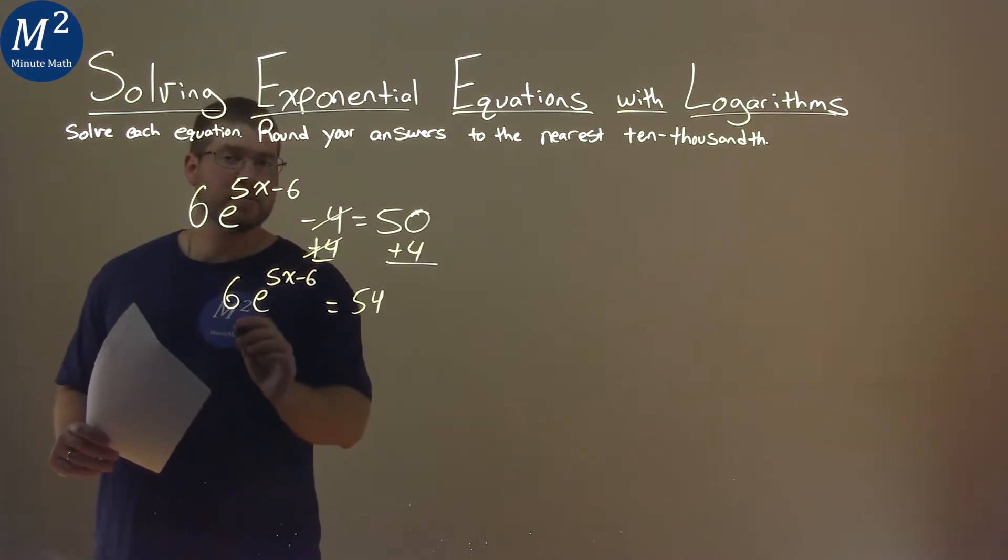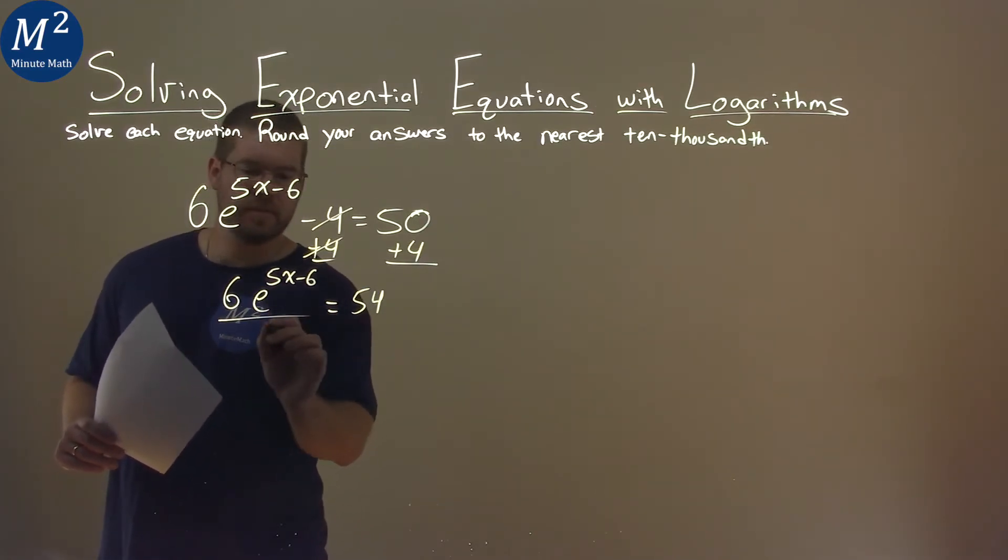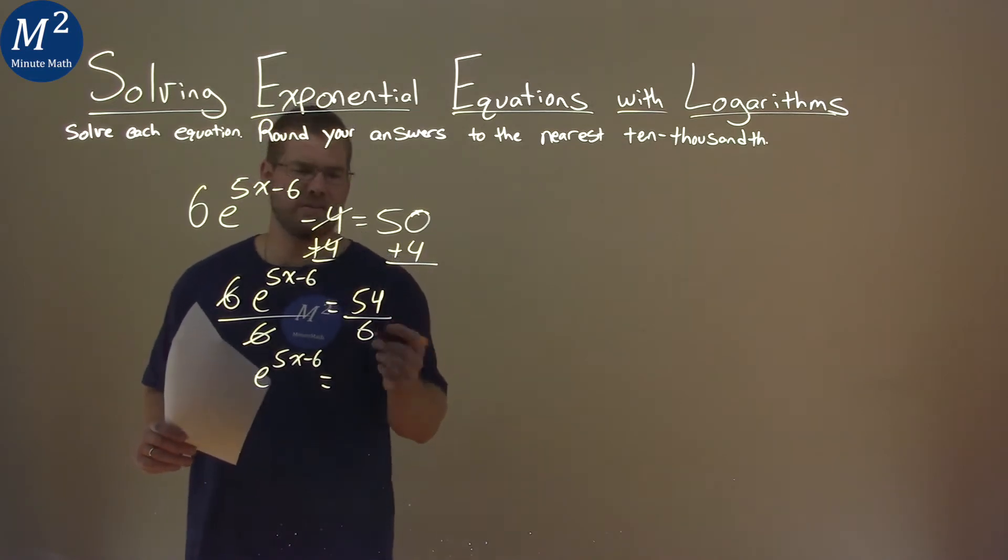Then I'm going to divide both sides by 6. The 6s cancel, and I'm left with e to the 5x minus 6 power, and 54 divided by 6 is 9.